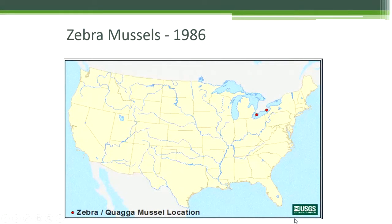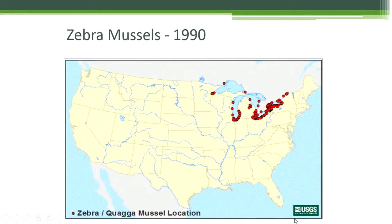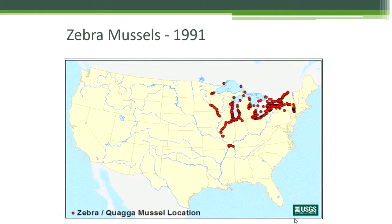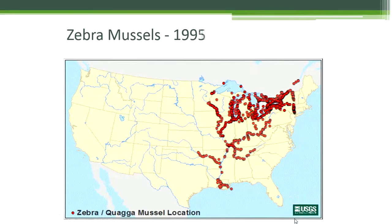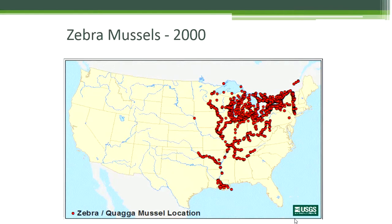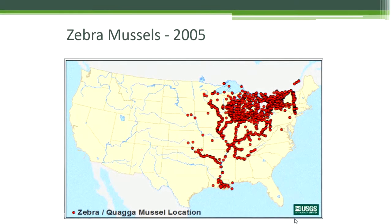Though the zebra mussels were initially detected in only two locations, their numbers quickly grew as they invaded the Great Lakes. By 1991, the zebra mussels had started to make their way beyond the Great Lakes and into major rivers, including the Mississippi River. From here, the situation only gets worse.